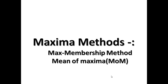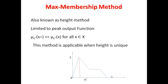One specific method is the maxima method, with two sub-parts: max membership method and mean of maxima. First we will discuss max membership method. This method is also known as the height method. It is called the height method because, as you can see in this diagram, we are looking at specific values and their membership values, where this is the peak value.